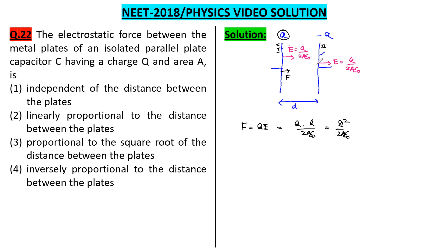This plate which has a charge minus Q placed in this electric field E will also experience a force F in this direction and its magnitude will be given by this. So we see F is equal to Q square upon 2A epsilon 0.